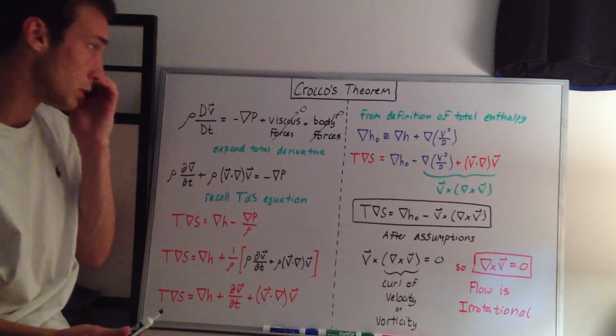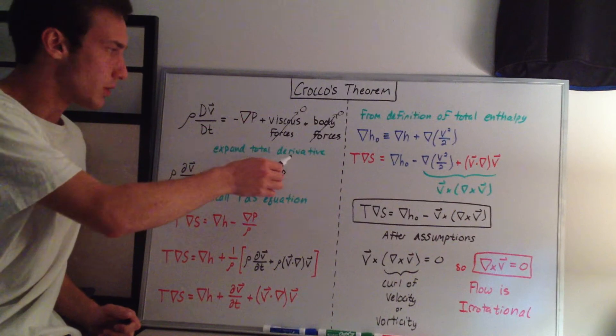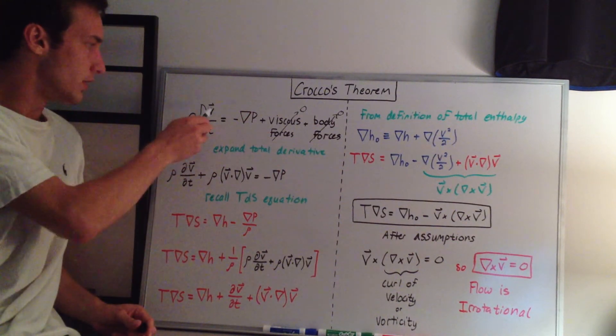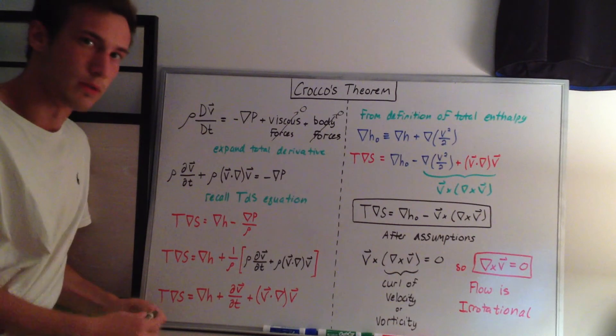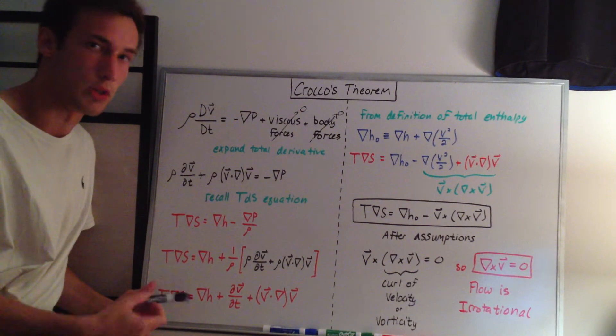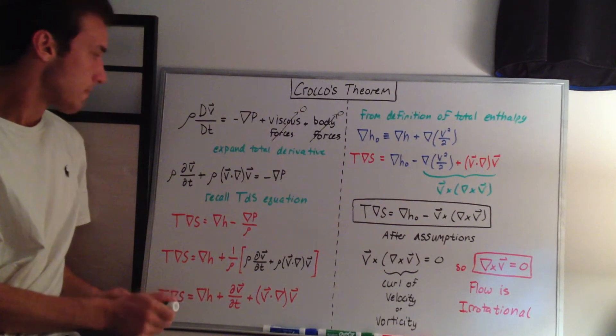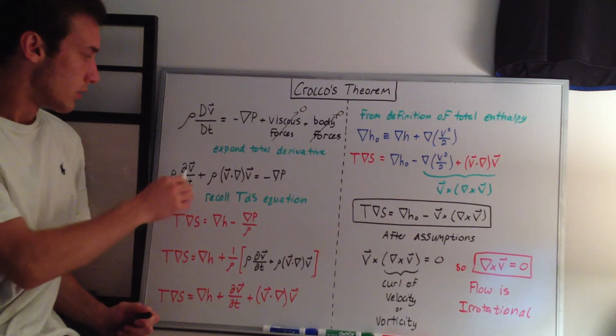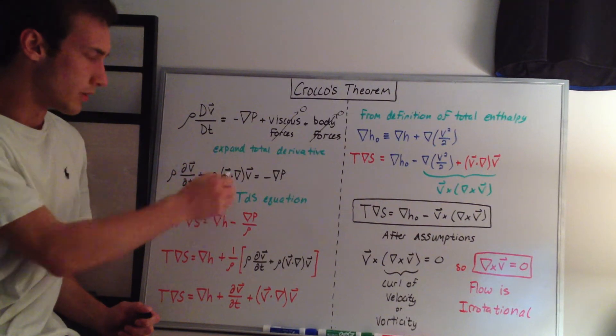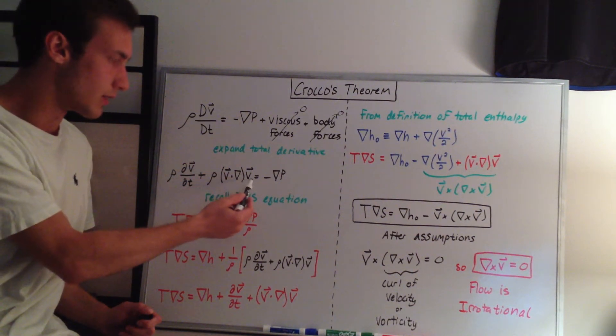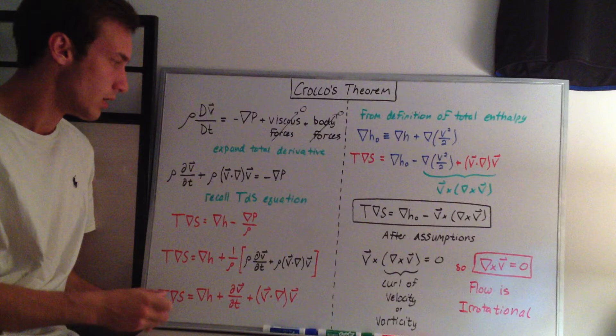We can also expand the total derivative, this dv/dt. You can also look at the total derivative video that I have, which I'll also post in the description. What you have then is rho dv/dt plus rho velocity dotted with the del operator times the velocity equal to the negative of the pressure gradient.